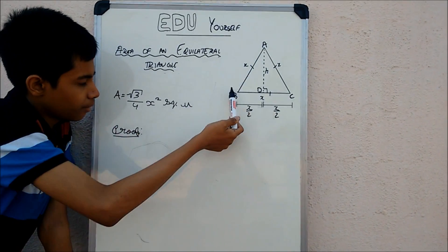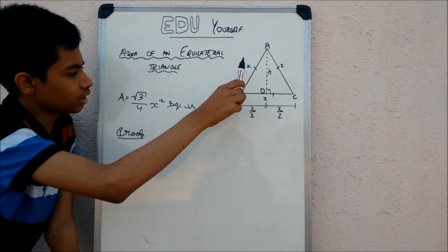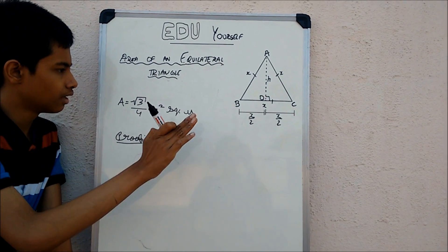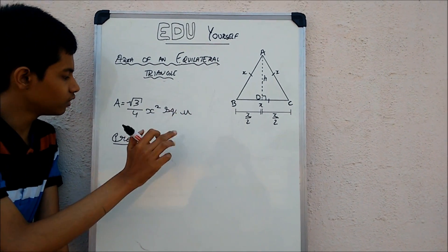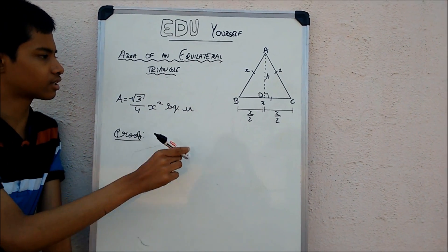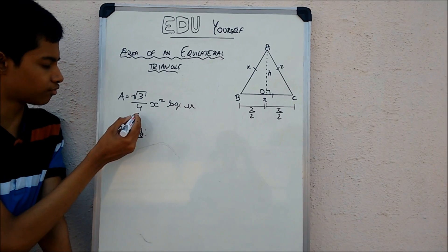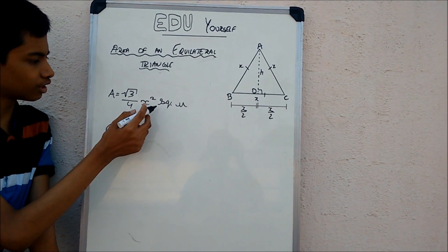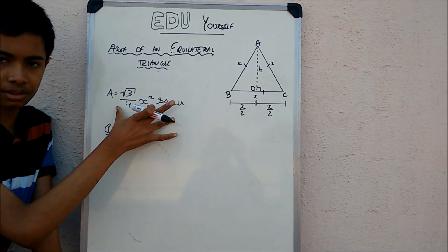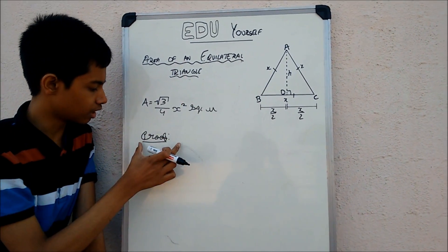So we have an equilateral triangle ABC, each of whose sides measure x respectively. Now we know that the area of this equilateral triangle is nothing but root 3 by 4 times x squared square units. Now this is our statement, let's go about proving it.